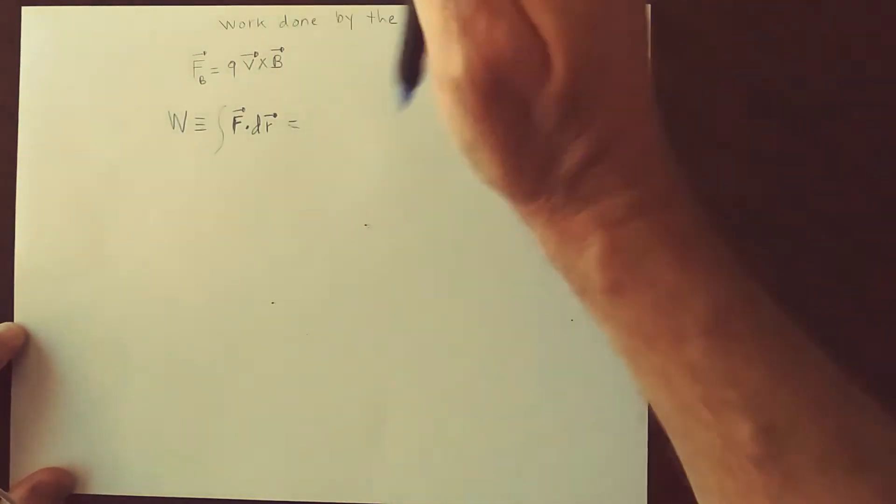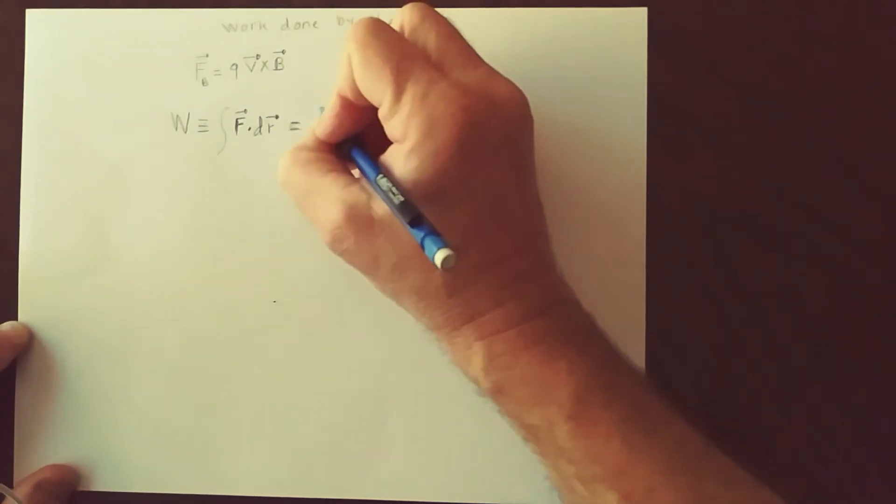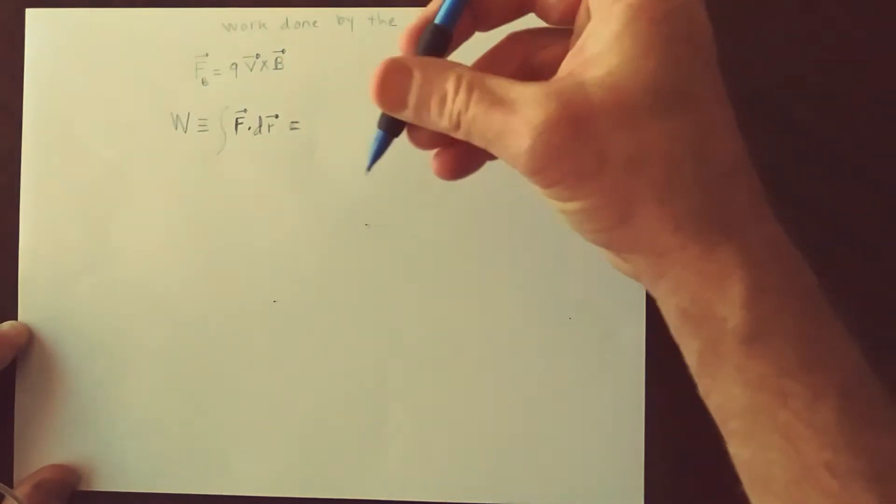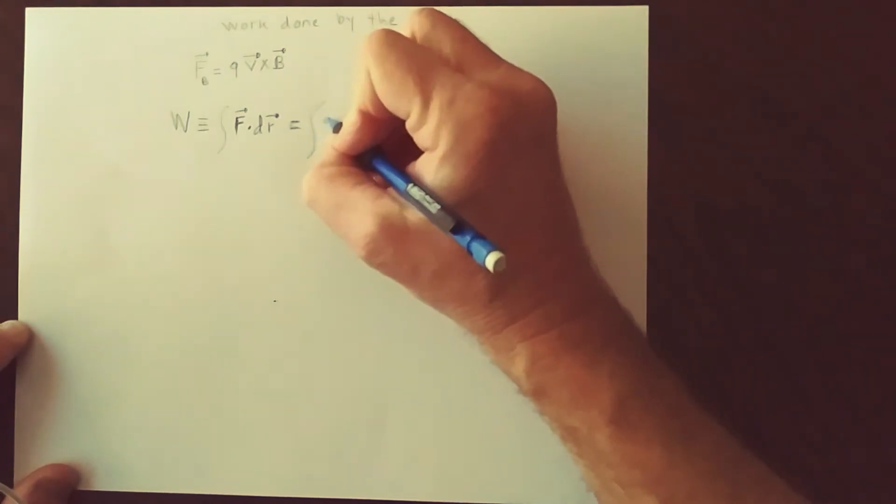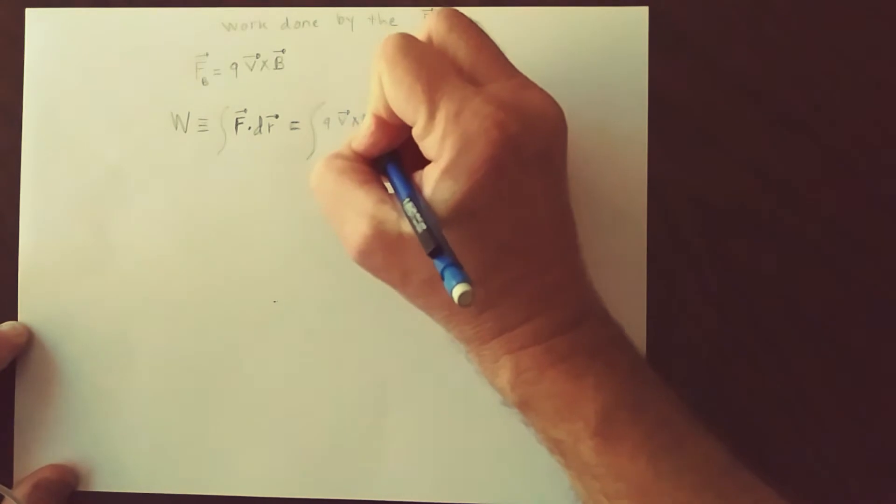And we're going to replace this by the magnetic force. It's not just any old force, so it's Q V cross B. That's some vector.